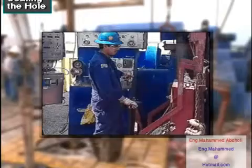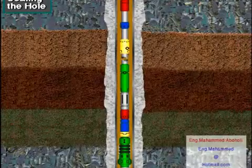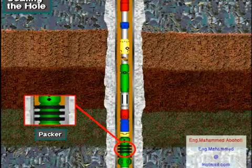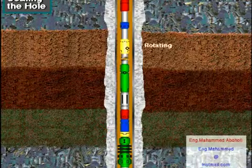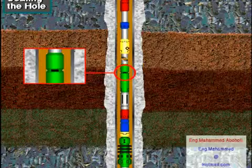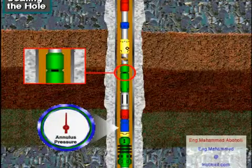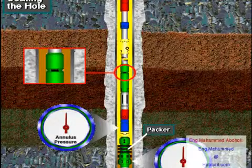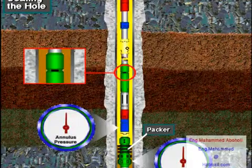With the DST tool on the bottom, the driller slacks off the drawworks brake to put weight on the tool. Weight causes the packer to expand, and the packer seals off the hole beneath it. With the hole sealed by the expanded packer, the DST operator rotates the drill string. Rotation opens ports inside the DST tool. With the ports open, formation fluids flow into the tool and to the surface. During this time, crew members closely monitor annulus pressure to make sure the packer maintains a good seal between the hole section being tested and the annulus above the packer.